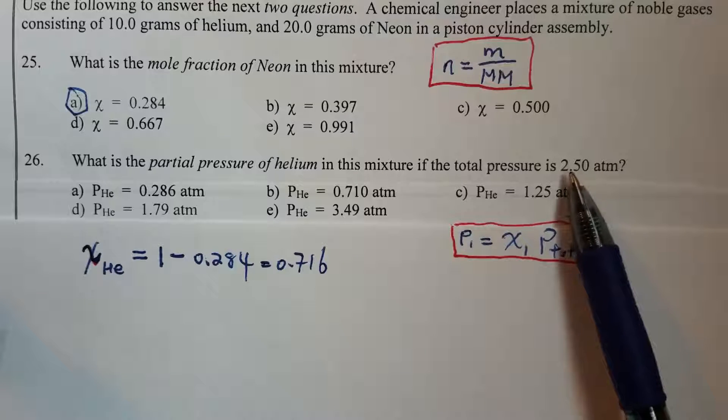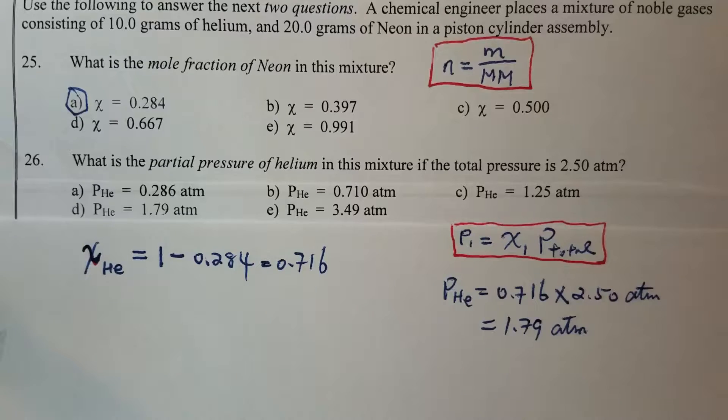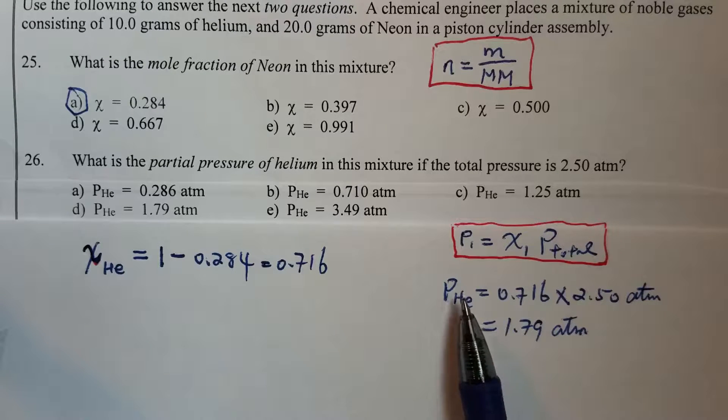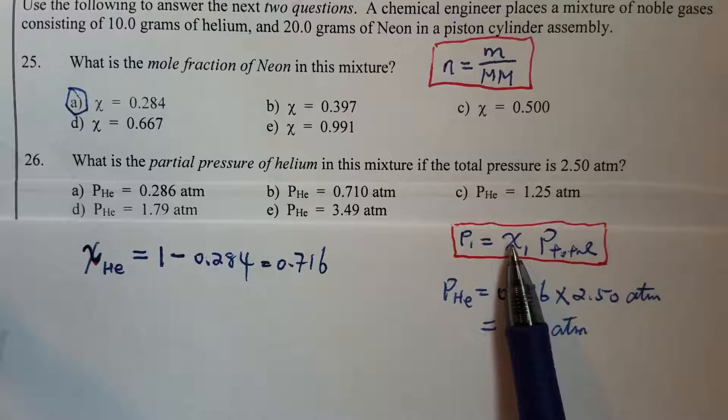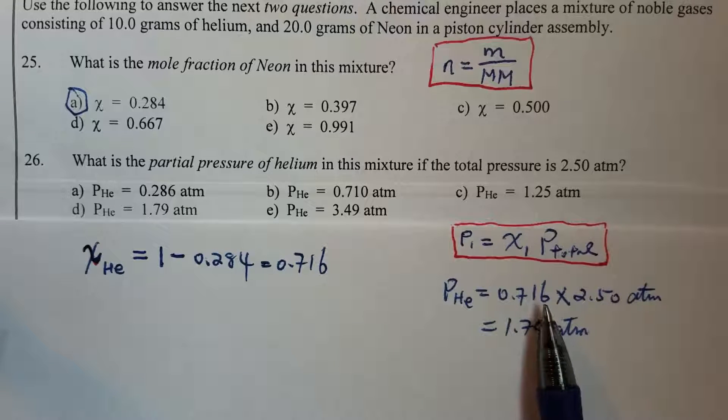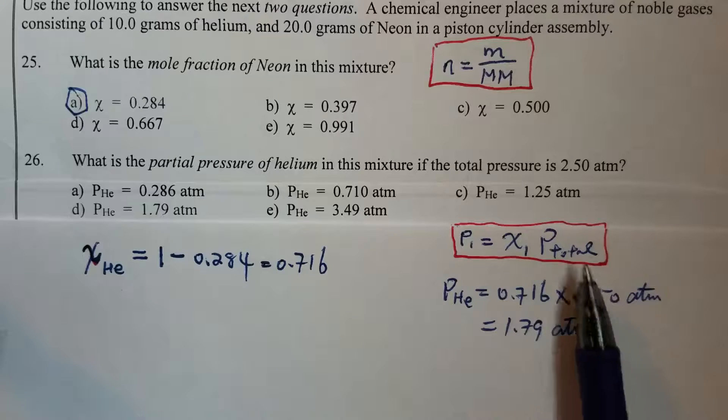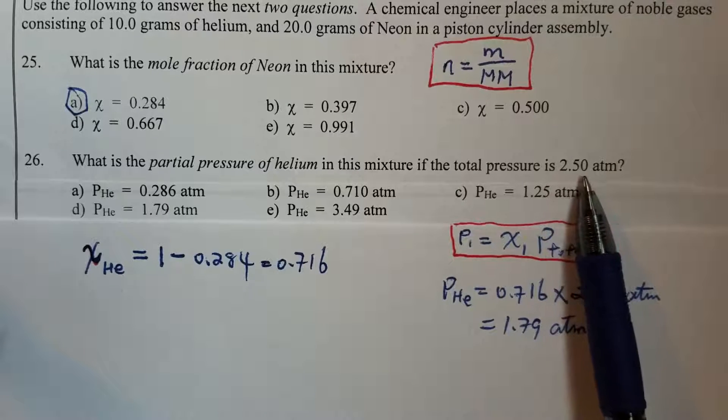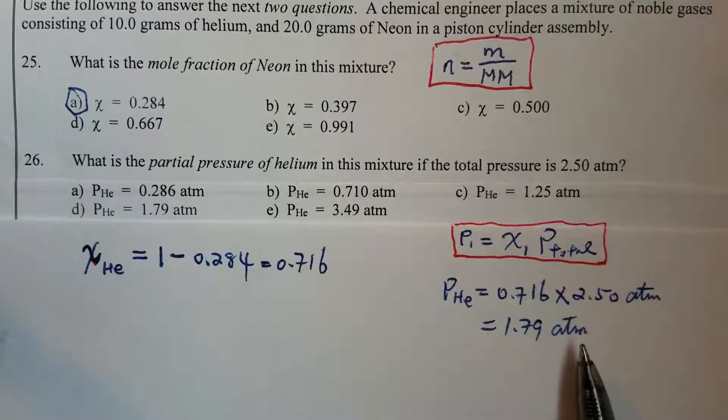Then times the total pressure, 2.5, we will get the partial pressure for helium. Now the partial pressure for helium equals mole fraction of helium, 0.716, times the total pressure, 2.5, and equals 1.79 atmosphere.